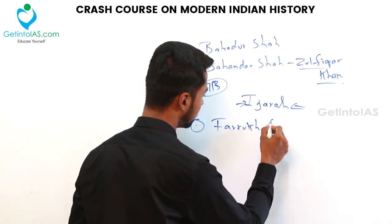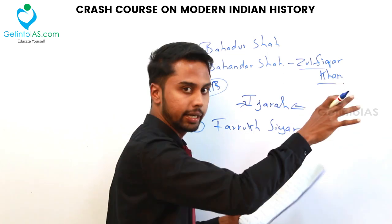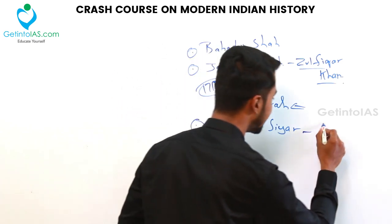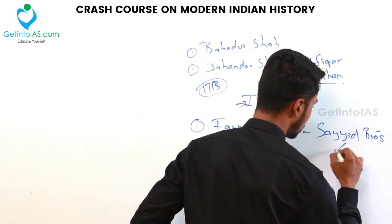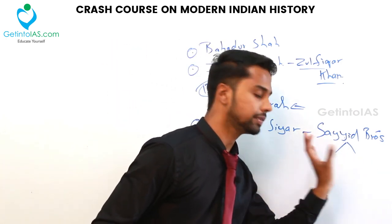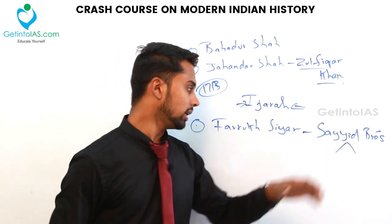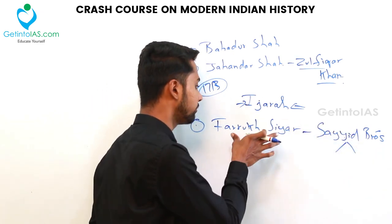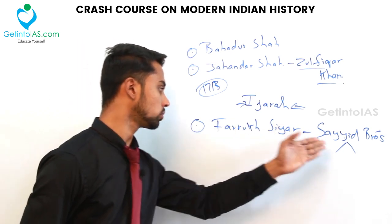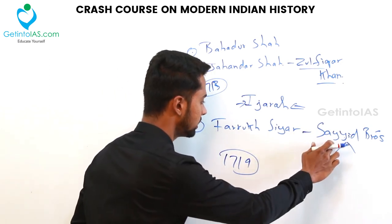Farrukh Siyar, the nephew of Jahandar Shah, took advantage of the conflict and ascended the throne with the help of the Sayyid brothers — Abdullah Khan and Husain Ali Khan Baraha. These Sayyid brothers were known as the king-makers of modern Indian history. But the Sayyid brothers were the men of the moment, and Farrukh Siyar did not give them the power to rule, leading to a frustrated relationship. In 1719, the Sayyid brothers killed Farrukh Siyar.